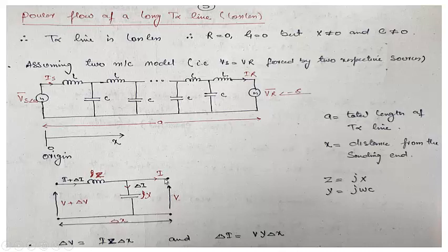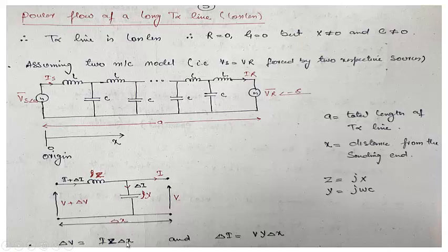This is the voltage at the right side of the element, and this is the voltage at the left side toward the sending end. This voltage will equal that voltage plus delta V across the impedance. Similarly, this current will equal the receiving-side current plus delta I. Delta V is the voltage drop across this impedance, equal to I·Z·dx, where Z is the impedance per unit length. To get the total impedance of this elemental length delta X, the series impedance is Z times delta X.